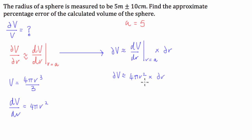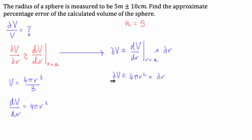Now, the clincher in this question is how we get from ΔV to ΔV over V, the percentage error the question is asking for. What we're going to do is, like with any algebra question, we're just going to divide both sides by V. Dividing this side and this side by V gives us ΔV over V on one side.